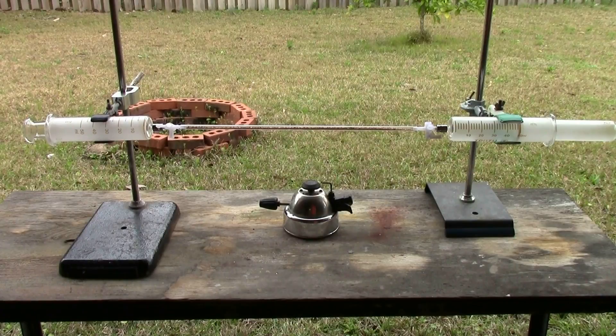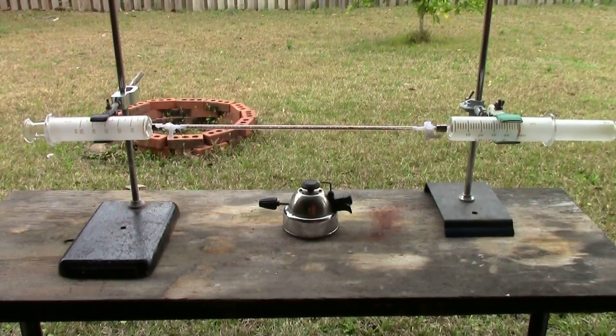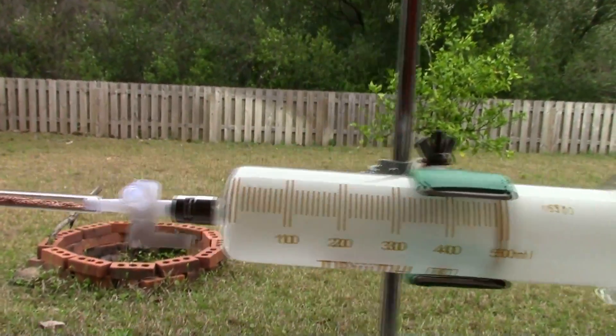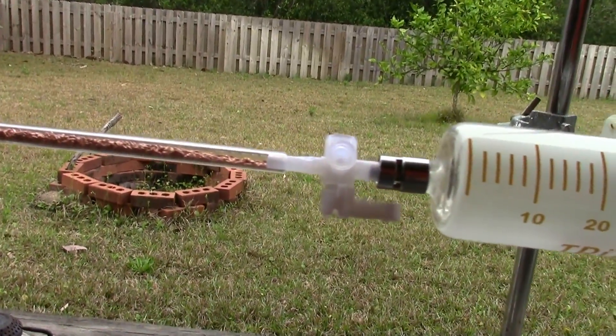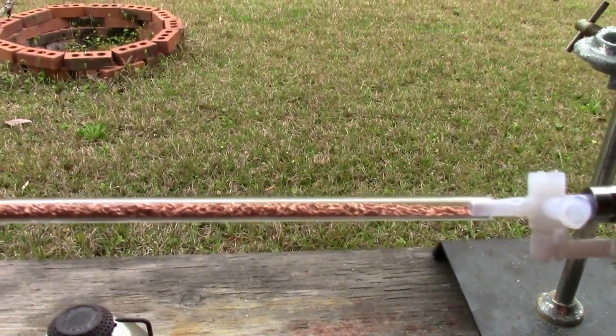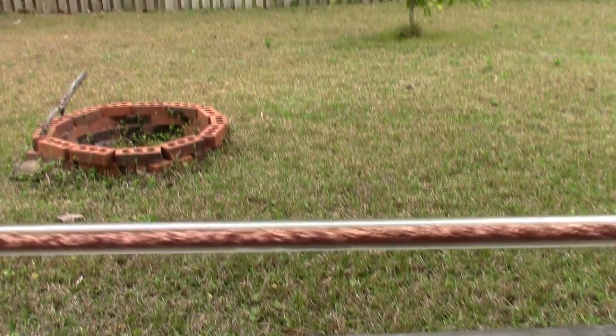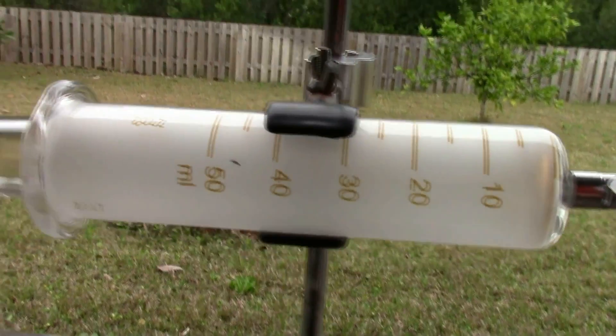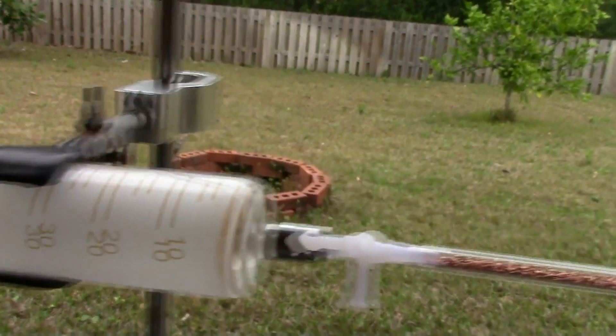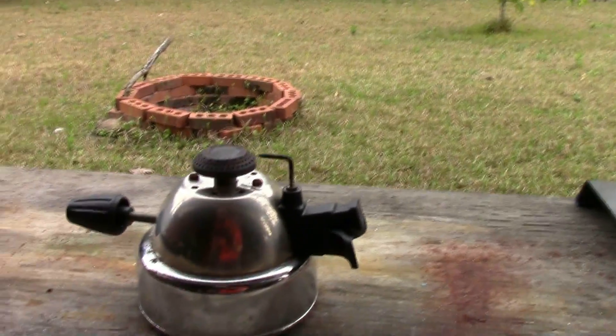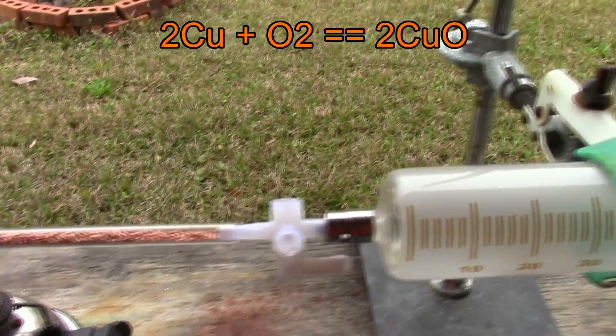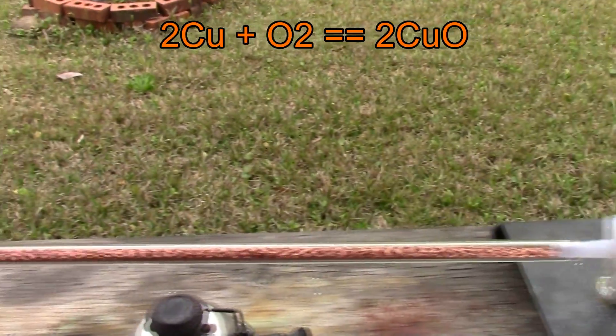Now I've got the setup filled with helium, and we're ready to start the experiment. We've got 50 milliliters of helium in this syringe, which is attached to a three-way stopcock currently closed, that goes to a glass tube filled with little bits of copper, connected to the other three-way stopcock also closed, and the other 50 milliliter syringe. We're going to heat this copper using my little butane burner from below, and the hot copper is going to react with any oxygen in the helium, and it should turn black.